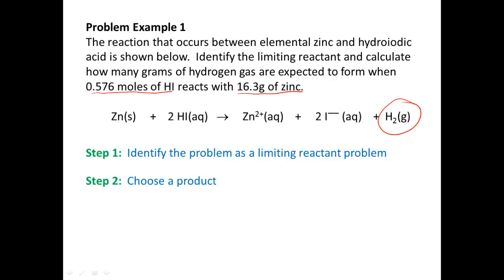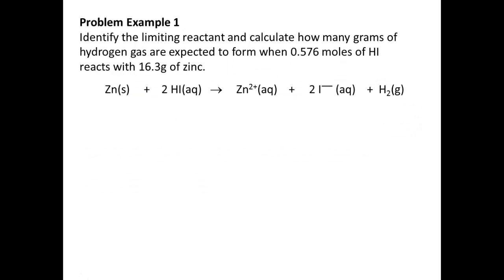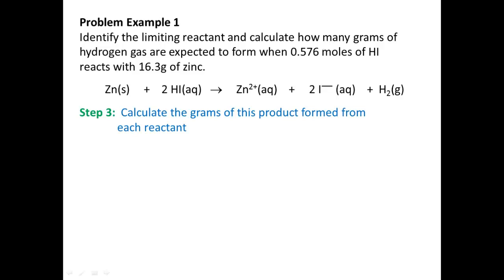I'm picking hydrogen gas for two reasons. First, we're asked to calculate how many grams of hydrogen gas are expected to form. Second, this is not aqueous — typically aqueous products we don't really care how much is formed, so I go with anything that's not aqueous. If you pick zinc iodide, that's fine; we'll end up with the same answer in the end, but hydrogen will be a little bit easier. So now for step three, we're going to calculate the grams of product formed from each reactant, and we picked hydrogen gas.